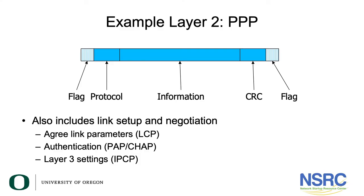PPP has a bunch of other features as well which are useful in broadband access networks. There are sub-protocols — one called LCP where the two ends of a PPP link can agree the parameters for that link. There's authentication, so users can be required to log in and provide a username and password before gaining access. And there are facilities for negotiating Layer 3 settings, which basically means an ISP can assign an IP address to the end user. These are just extra features; the fundamental thing is that PPP is a Layer 2 protocol that divides data up into frames.